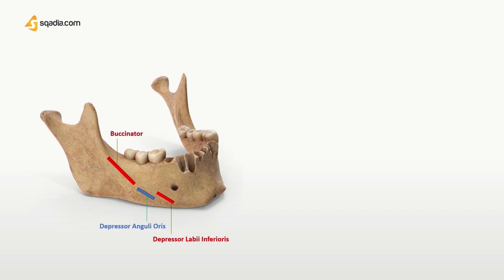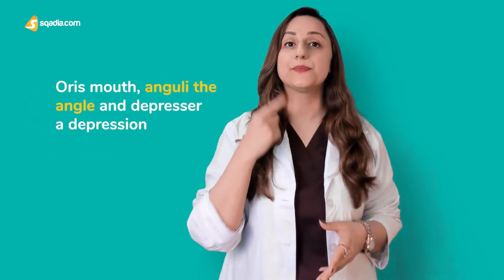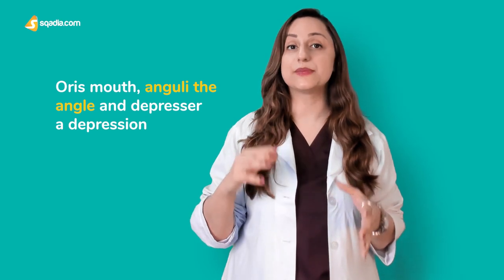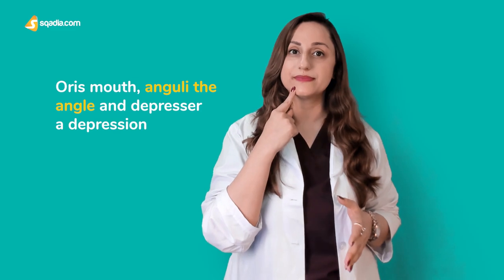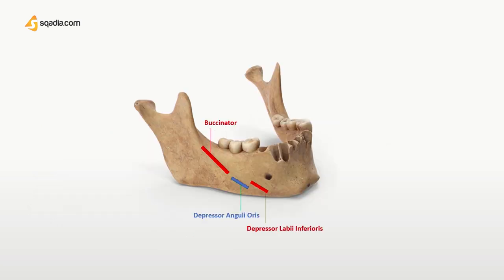From the oblique line below the mental foramen, the depressor anguli oris originates — the name is self-explanatory: oris means mouth, anguli means angle, and depressor indicates it depresses the angle of the mouth. The depressor labii inferioris depresses the lower lip. The incisive fossa gives origin to the mentalis and the mental slips of the orbicularis oris.